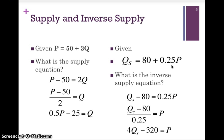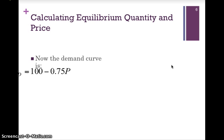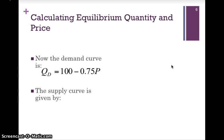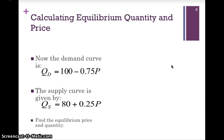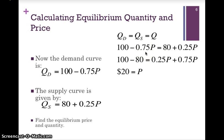Once you are given a demand and supply function, how do we find equilibrium? Equilibrium occurs where demand and supply intersect — where quantity demanded equals quantity supplied. So equilibrium is where the demand function 100 minus 0.75P is set equal to the supply function 80 plus 0.25P. Once we have set demand equal to supply, we then solve. In this equation we are solving for P, meaning we need to make P the subject and get P alone.